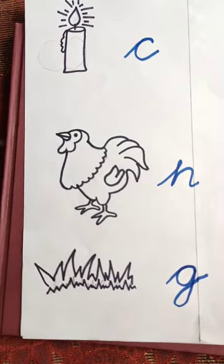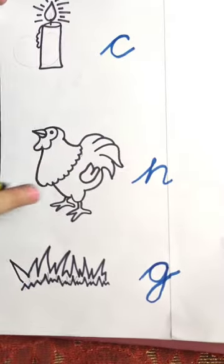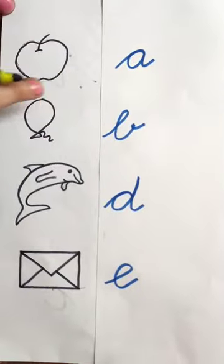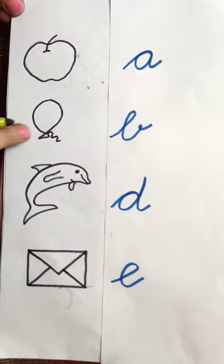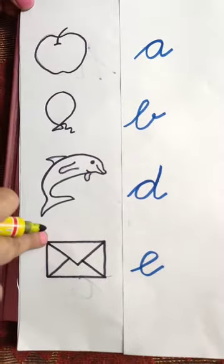Okay, children. Now, C, K, candle. H, H, hen. G, G, grass. A, Apple. B, Balloon. D, Dolphin. E, Envelope.